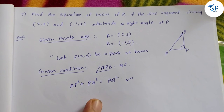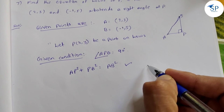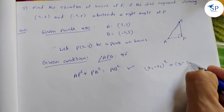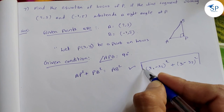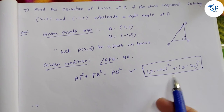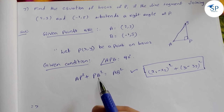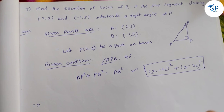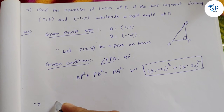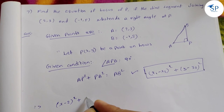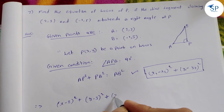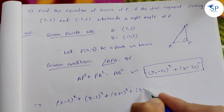This condition uses the distance formula. Let me show you: AP² = (x−2)² + (y−3)², PB² = (x+1)² + (y−5)², and AB² = (2+1)² + (3−5)². Substituting into AP² + PB² = AB².